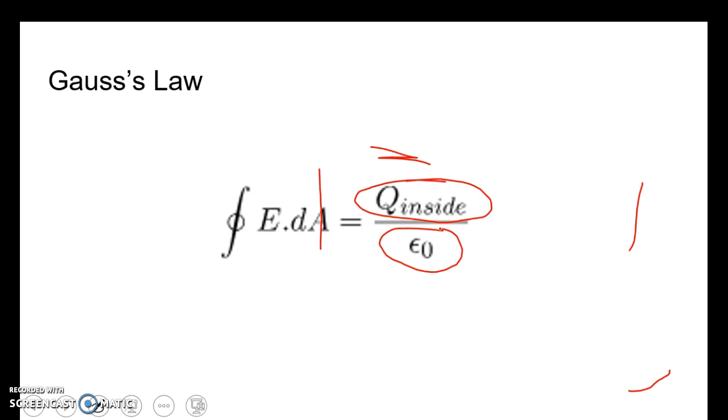What this equation means is that you can take any closed surface you like and find the electric field going through it, provided you can do the math. Usually you can't. However, there are a number of cases when it's nice and easy.